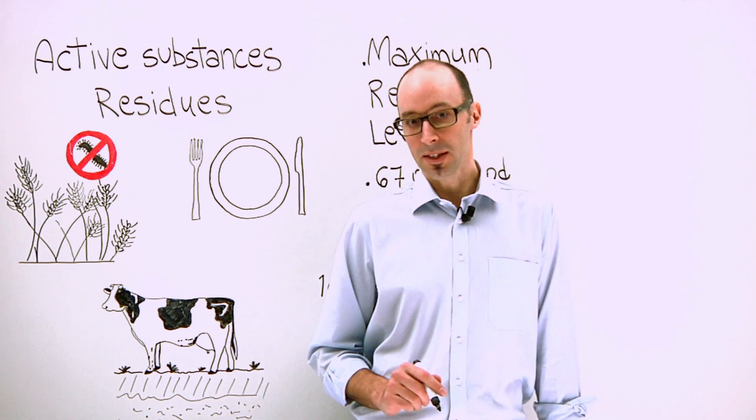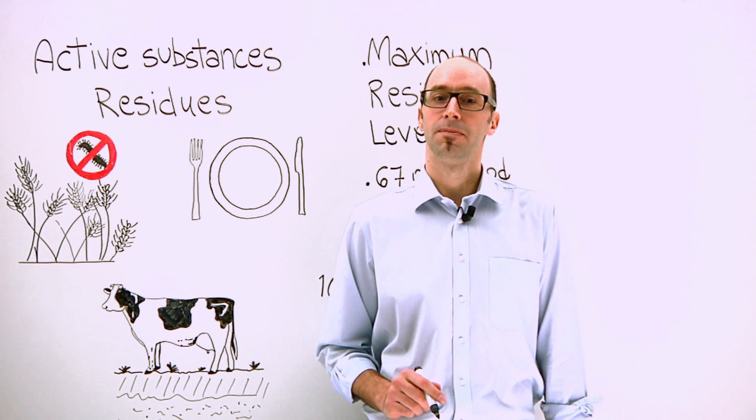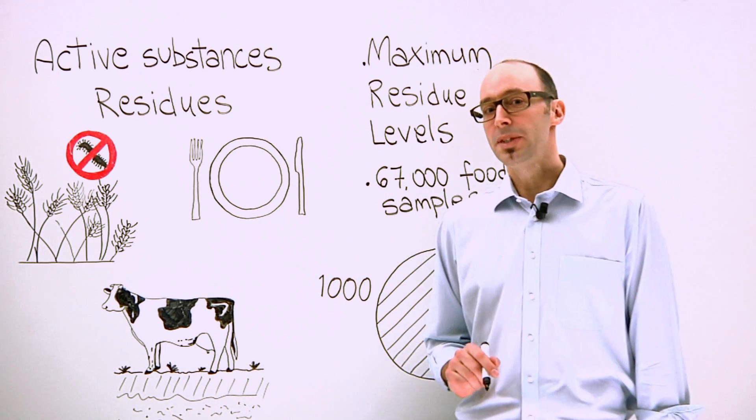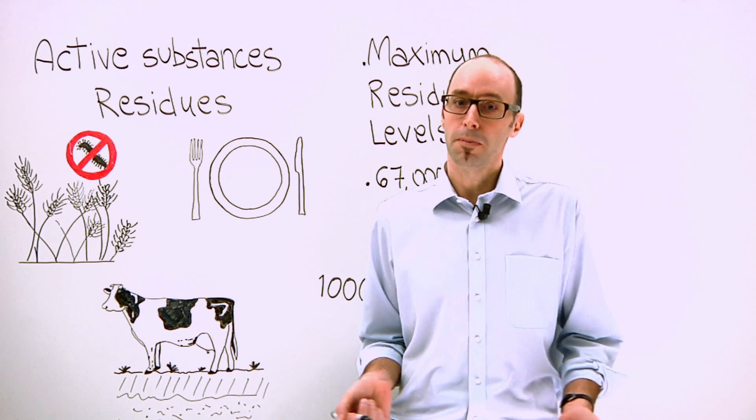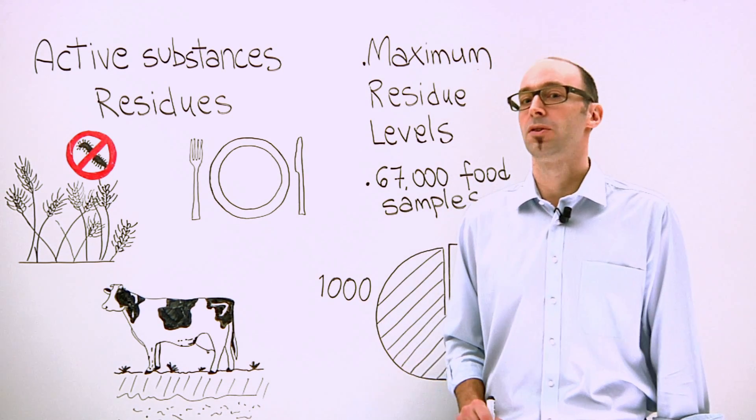I'm here to talk to you about pesticides and how they get into our food. Pesticides are used to protect crops from disease and infestation. They are considered important for protecting harvests and ensuring our food supply.